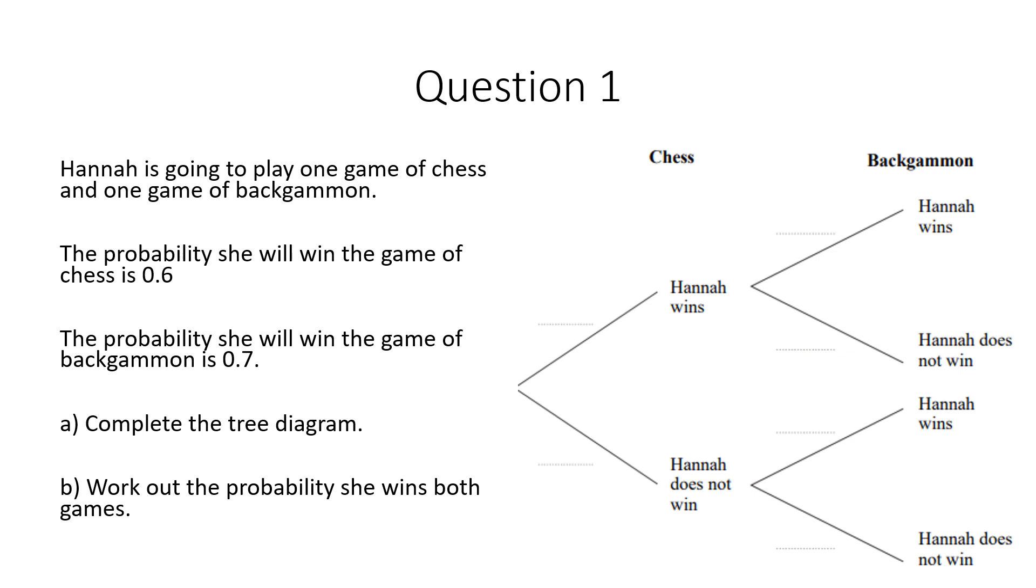It says Hannah is going to play one game of chess and one game of backgammon. So two separate games. The probability that she's going to win chess is 0.6. The probability that she wins backgammon is 0.7.